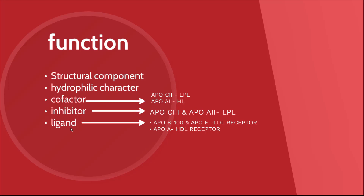Apolipoproteins also act as ligands to recognize lipoprotein receptors on the cell surface for the uptake of lipoprotein. For example, Apo B100 and Apo E act as ligands for the LDL receptor, and Apo A acts as a ligand for the HDL receptor.